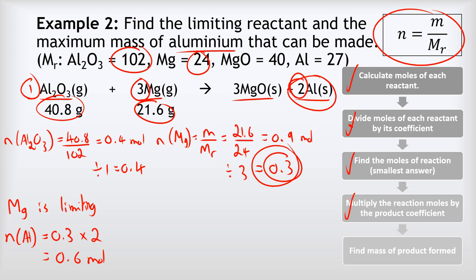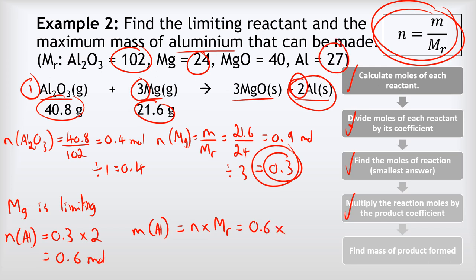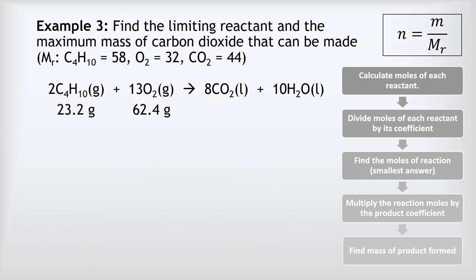The final step is to find the mass of 0.6 moles of aluminium. Mass = moles × relative formula mass = 0.6 × 27 = 16.2 grams of aluminium that we can make in this reaction.